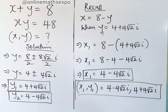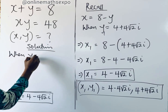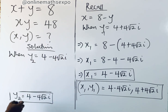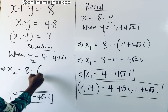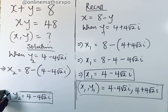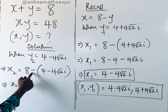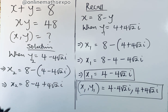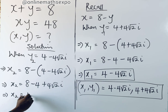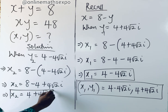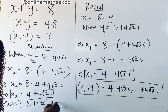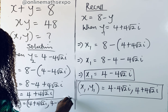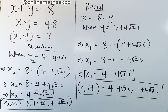For the second value, when y equals 4 minus 4 root 2 i, we have x equals 8 minus (4 minus 4 root 2 i). Distributing, we get 8 minus 4 plus 4 root 2 i, so x₂ equals 4 plus 4 root 2 i. So the two solution sets are: (x₁, y₁) = (4 minus 4 root 2 i, 4 plus 4 root 2 i), and (x₂, y₂) = (4 plus 4 root 2 i, 4 minus 4 root 2 i).